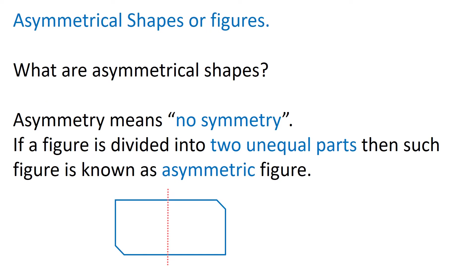Children, let us now see what are asymmetrical shapes or figures. Asymmetry means no symmetry. If a figure is divided into two unequal parts, then such a figure is known as an asymmetric figure. Look at this shape — the dotted line divides it into two halves, but if you fold it along the dotted line, the left half will not cover the right half completely. So the two halves are not mirror halves — this is an asymmetric figure.